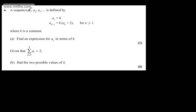In question 4 we're told a sequence a sub 1, a sub 2, a sub 3 and so on is defined by a sub 1 equals 4, a sub n plus 1 equals k multiplied by a sub n plus 2 for n greater than or equal to 1, where k is a constant. In part a we need to find an expression for a sub 2 in terms of k. The question carries one mark.